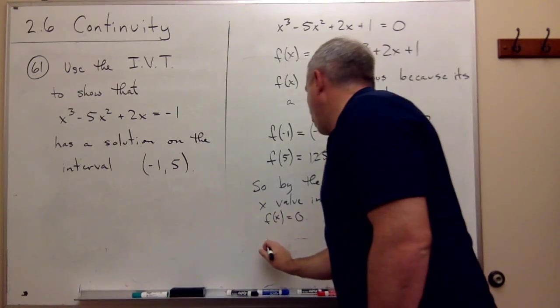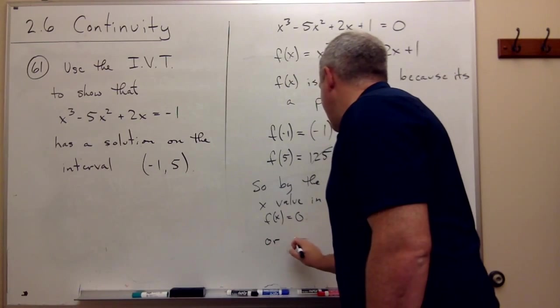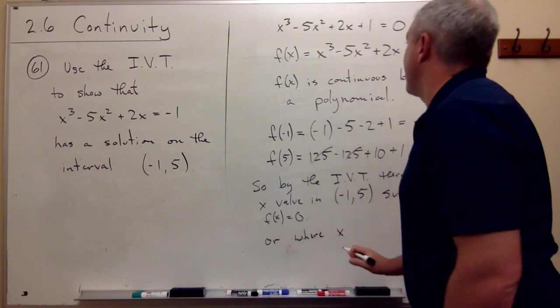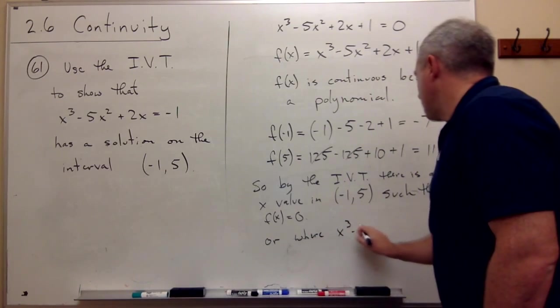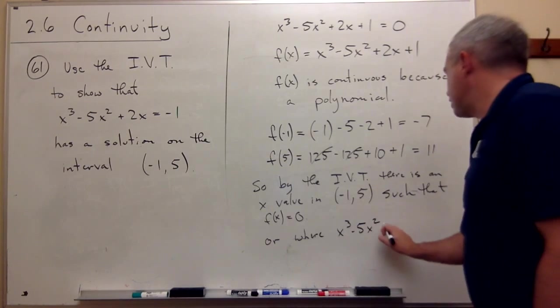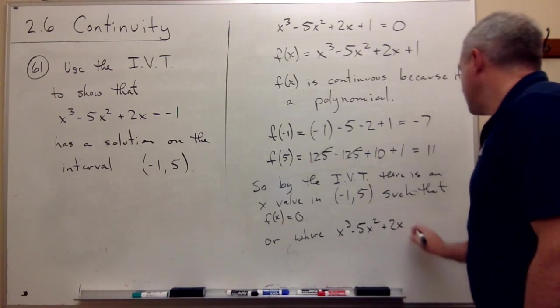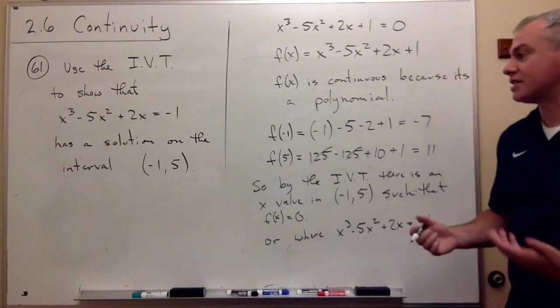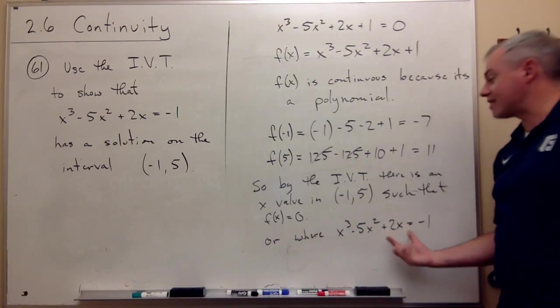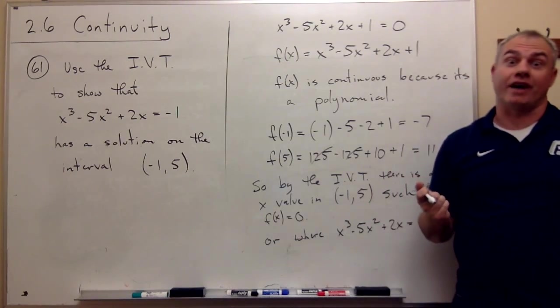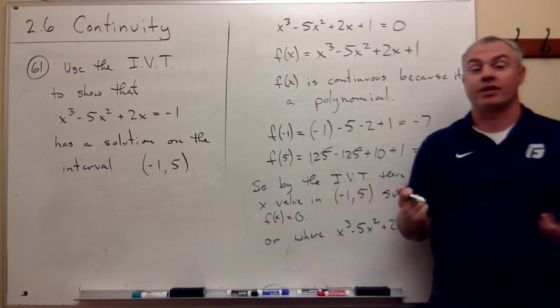or where x cubed minus 5x squared plus 2x equals negative 1. And that's what I ultimately wanted to show, that this has a solution somewhere between negative 1 and 5. And the intermediate value theorem gets the job done for us.